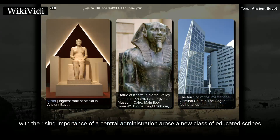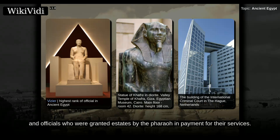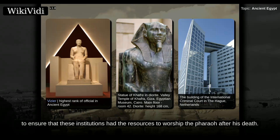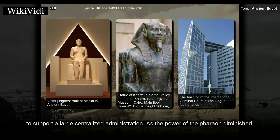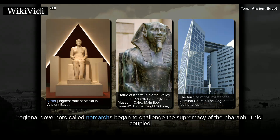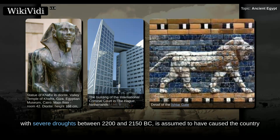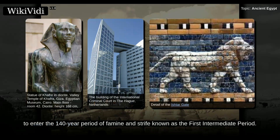Along with the rising importance of a central administration arose a new class of educated scribes and officials who were granted estates by the pharaoh in payment for their services. Pharaohs also made land grants to their mortuary cults and local temples. Scholars believe that five centuries of these practices slowly eroded the economic power of the pharaoh, and that the economy could no longer afford to support a large centralized administration. As the power of the pharaoh diminished, regional governors called nomarchs began to challenge the supremacy of the pharaoh. This, coupled with severe droughts between 2221–2150 BC, is assumed to have caused the country to enter the 140-year period of famine and strife known as the First Intermediate Period.